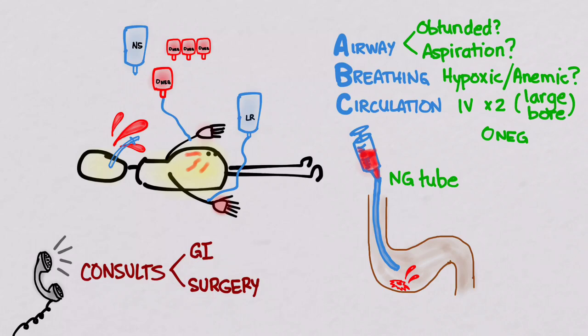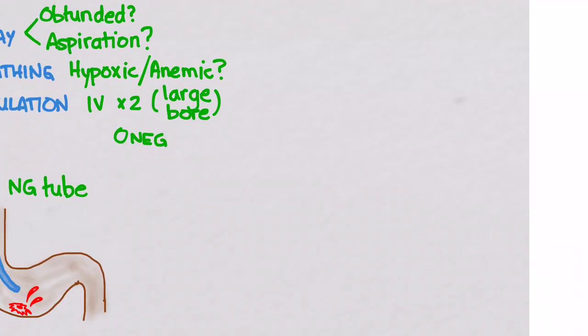There are also a couple of medications you can think about giving. The first one is a PPI. Proton pump inhibitors inhibit the proton pump, and they've been shown to take away the inhibition that the low pH causes on platelet aggregation. So you're going to have more clot formation. You're going to decrease the chance of re-bleeding and therefore decrease the length of stay.